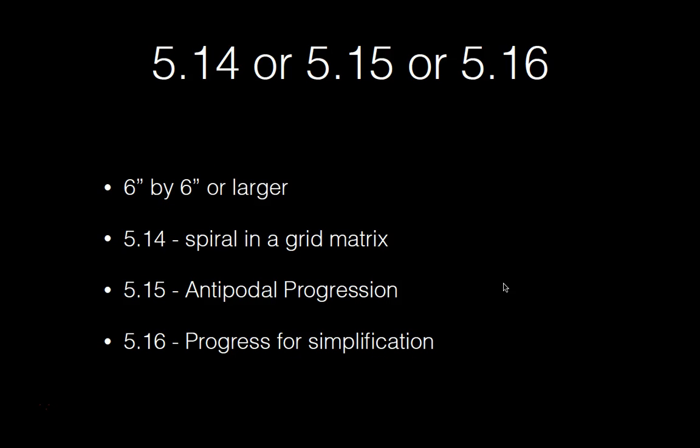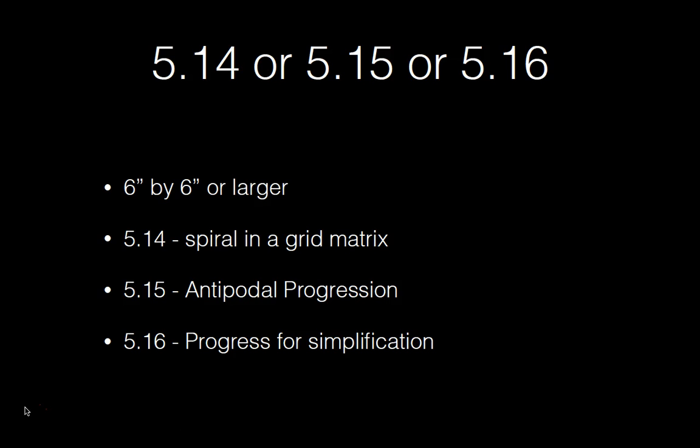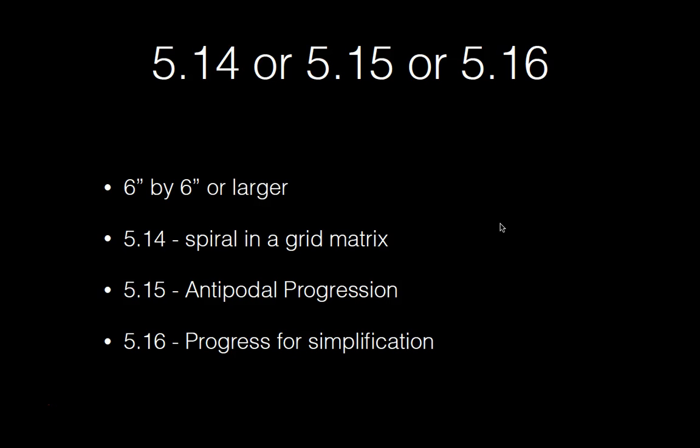The last one is 5.14, 5.15, or 5.16. These are all matrix styles designed — 6 by 6 inch or larger. 5.14 is a spiral in a grid matrix, 5.15 is antipodal progression, and 5.16 is progression for simplification. Antipodal means relating to or situated on the opposite side — diametrically opposed to something. So think of dipolar opposites.